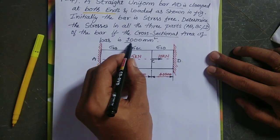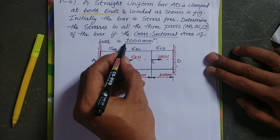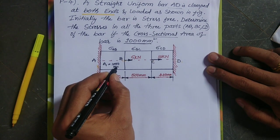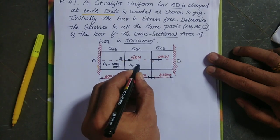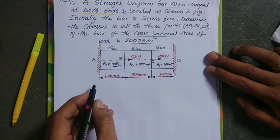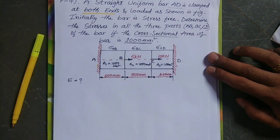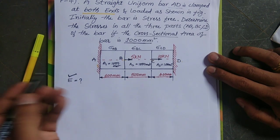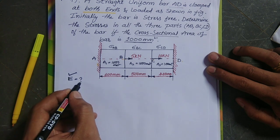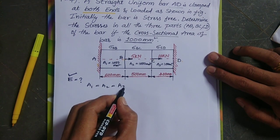The cross-sectional area of the bar is given as 1000 millimeter square, meaning the bar is uniform and the entire section has the same area. So A1, A2, and A3 are all equal to 1000 millimeter square. Young's modulus E is not mentioned in the question, so we assume the bar has homogeneous material properties and E will be the same for the entire bar.